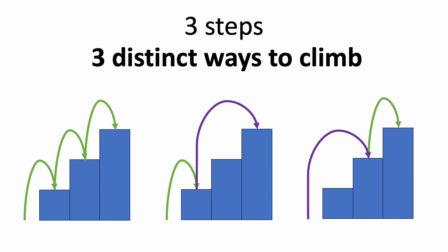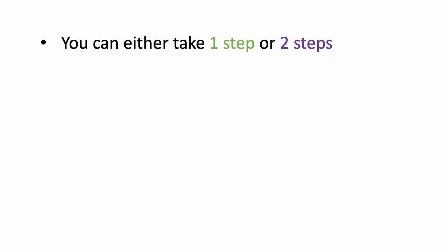First, let's look at the recursive solution, and once we understand that, we can improve it using dynamic programming. Let's look closely at the very first decision you can make — you can take either one step or two steps, and those are your only choices.